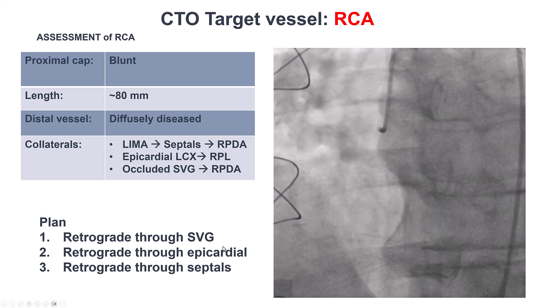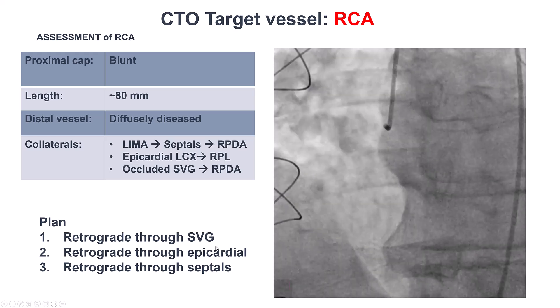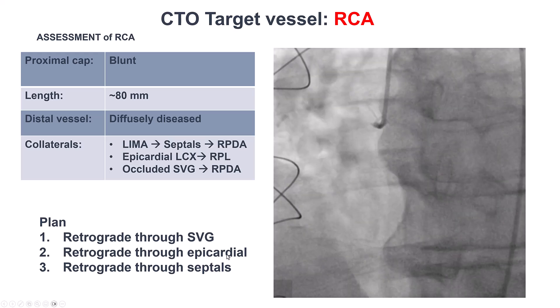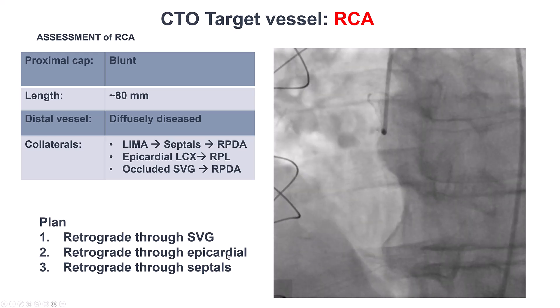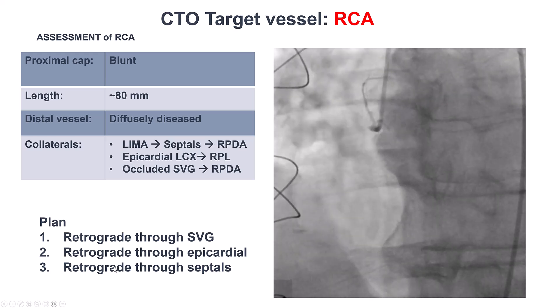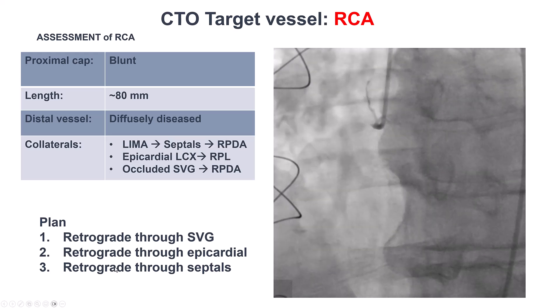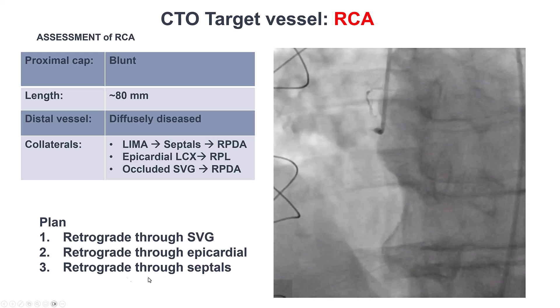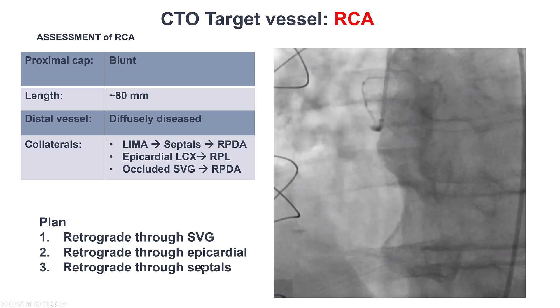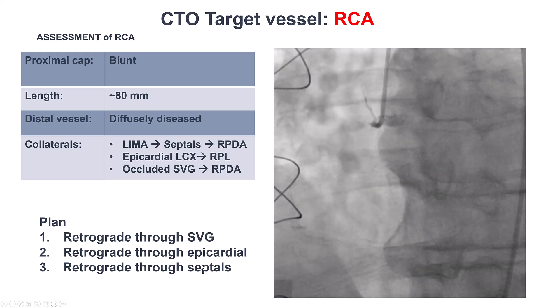Our plan was to first start with the easier potentially tasks: retrograde through the saphenous vein graft. If that didn't work, go through the epicardial from the left. And if that didn't work, considering going through the LIMA, although the threshold for doing that is much, much higher.